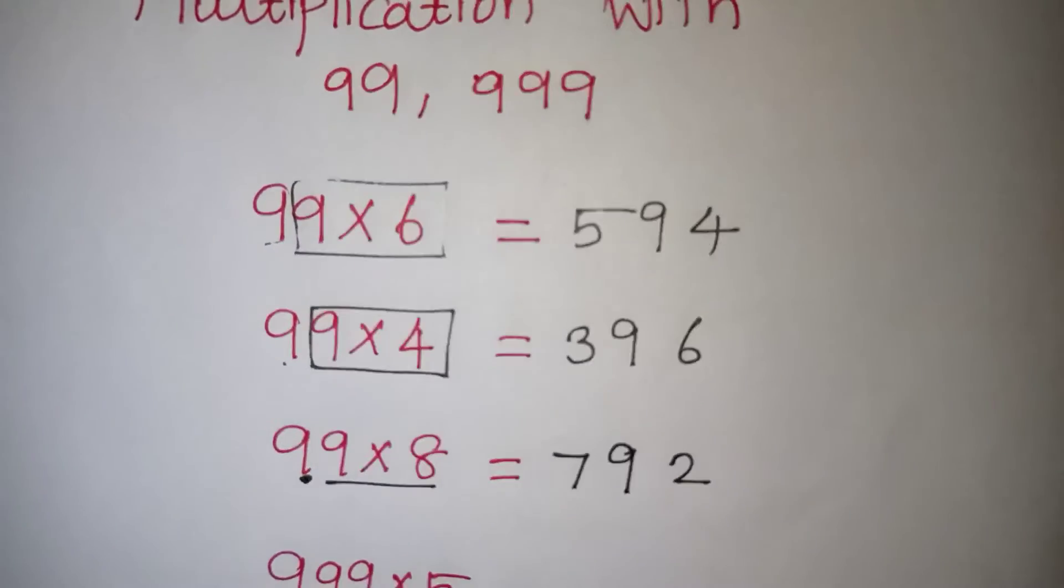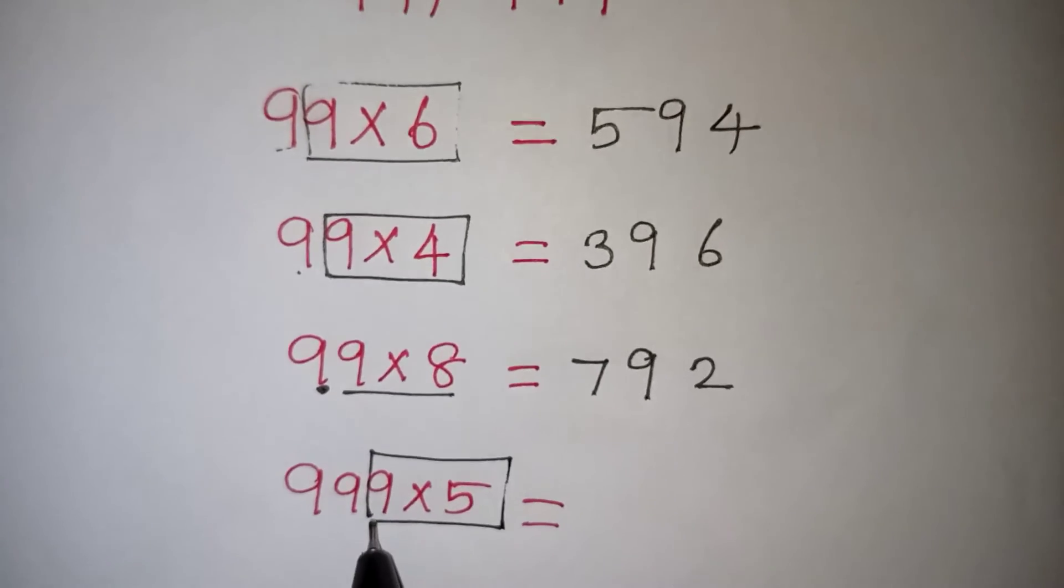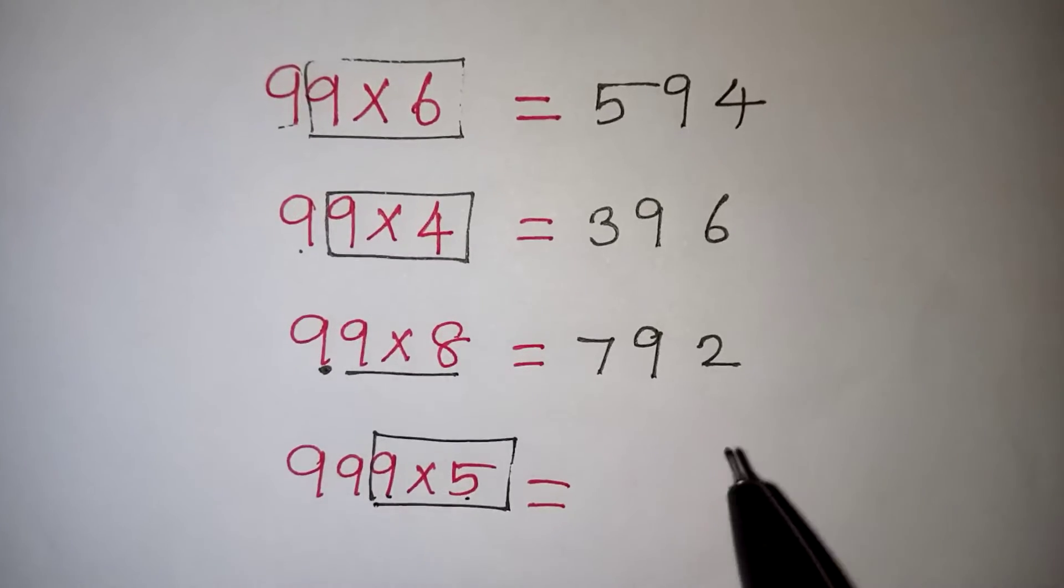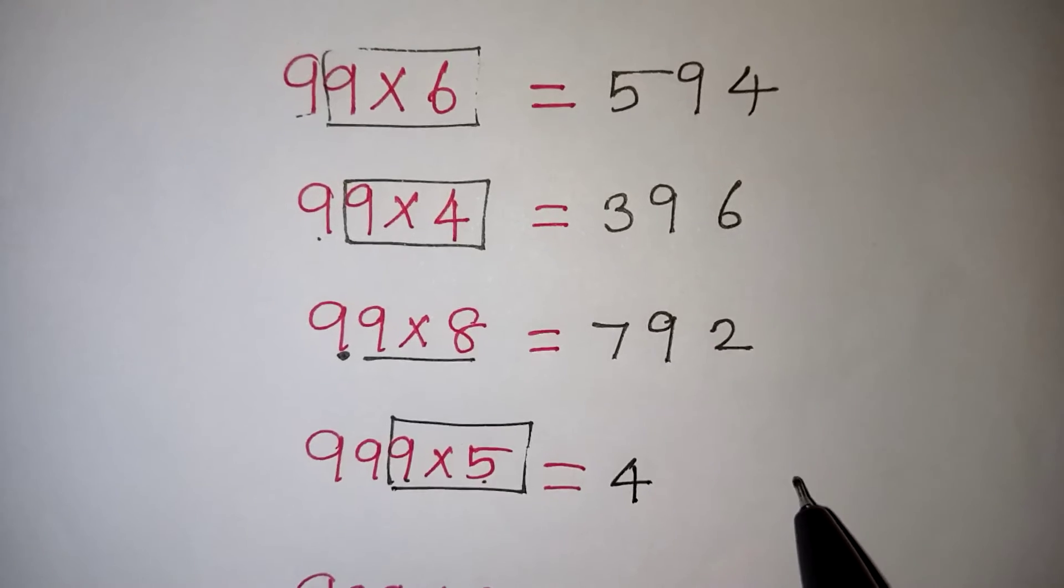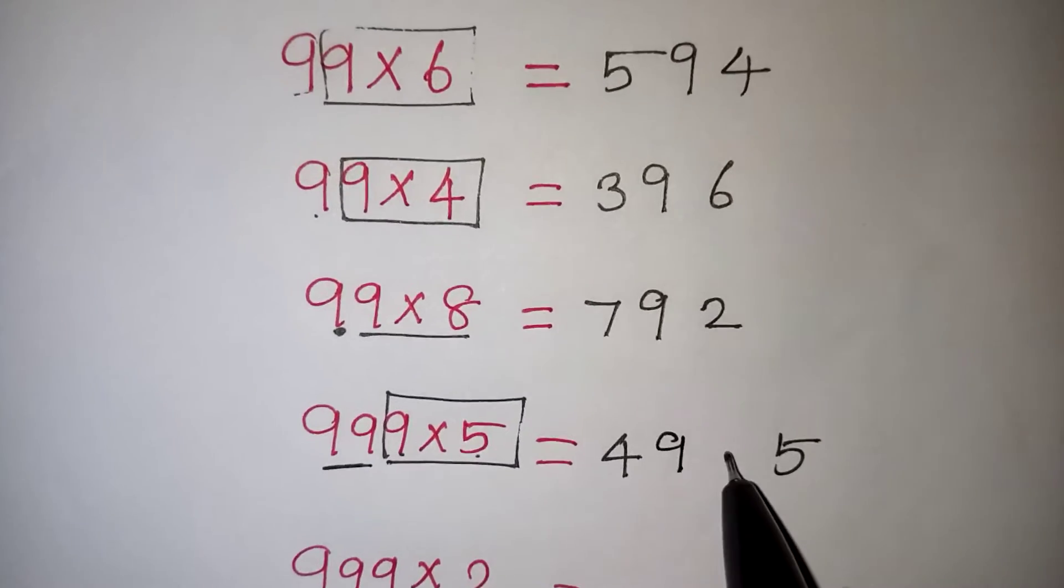Now the same for triple 9. Triple 9 also in the same method. Only one 9 should be attached with the number which is given. So 9 times 5 is 45. Just write the 4 and 5 here. Now two 9's are remaining. So the two 9's should be written in between.